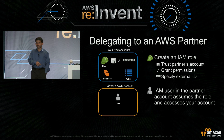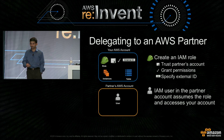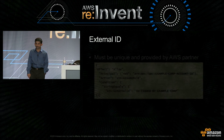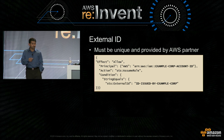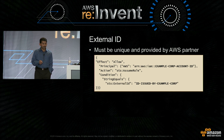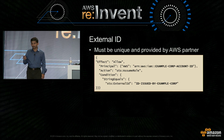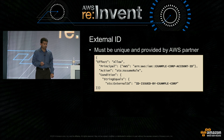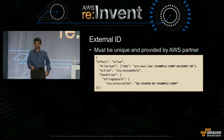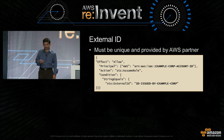The IAM user in the partner's account assumes the role and accesses your account. External ID is a piece of data that must be unique per customer of the partner, and it must be provided by the partner. In the trust policy, you add a condition which includes this external ID. So if you look at the policy, it says the trusted principal is the example corp — a partner account ID — and the condition says that external ID must match whatever ID the partner has issued to me.